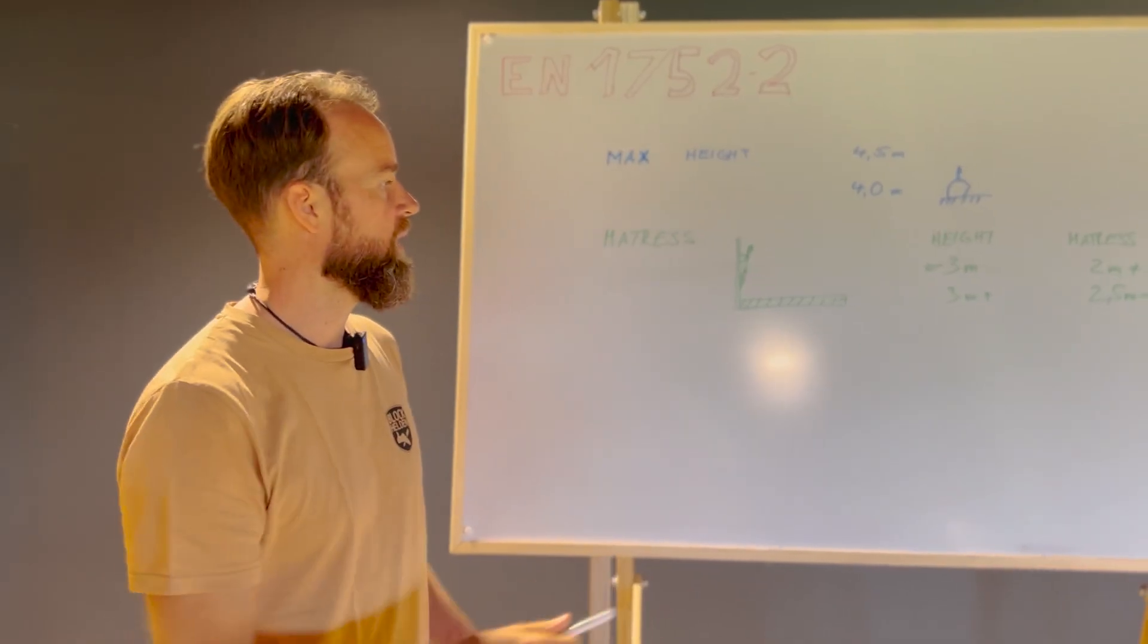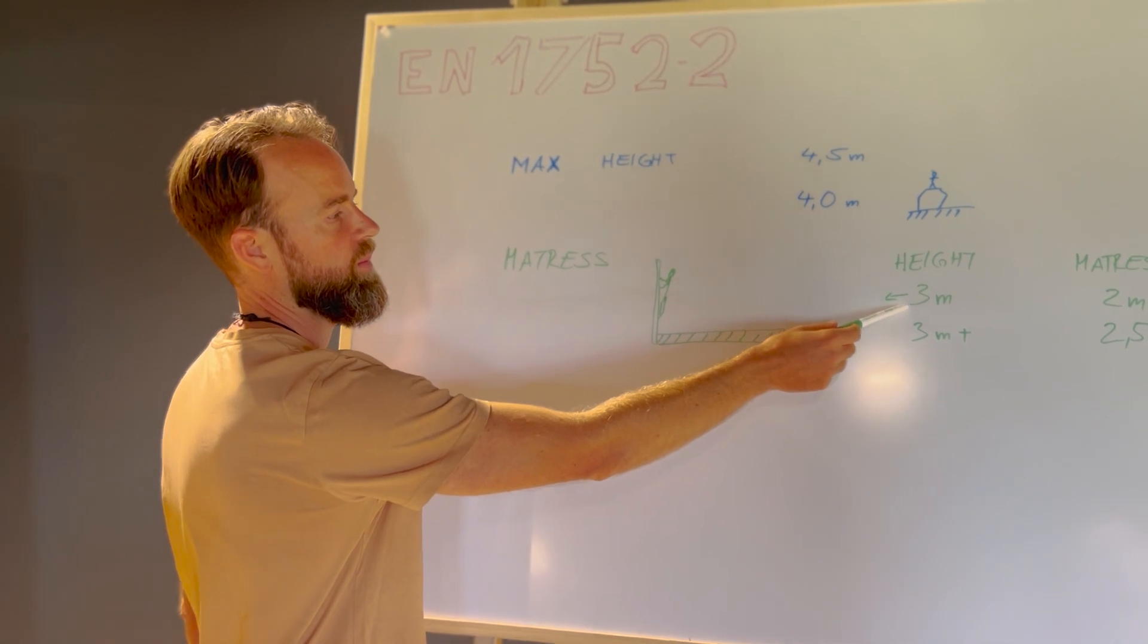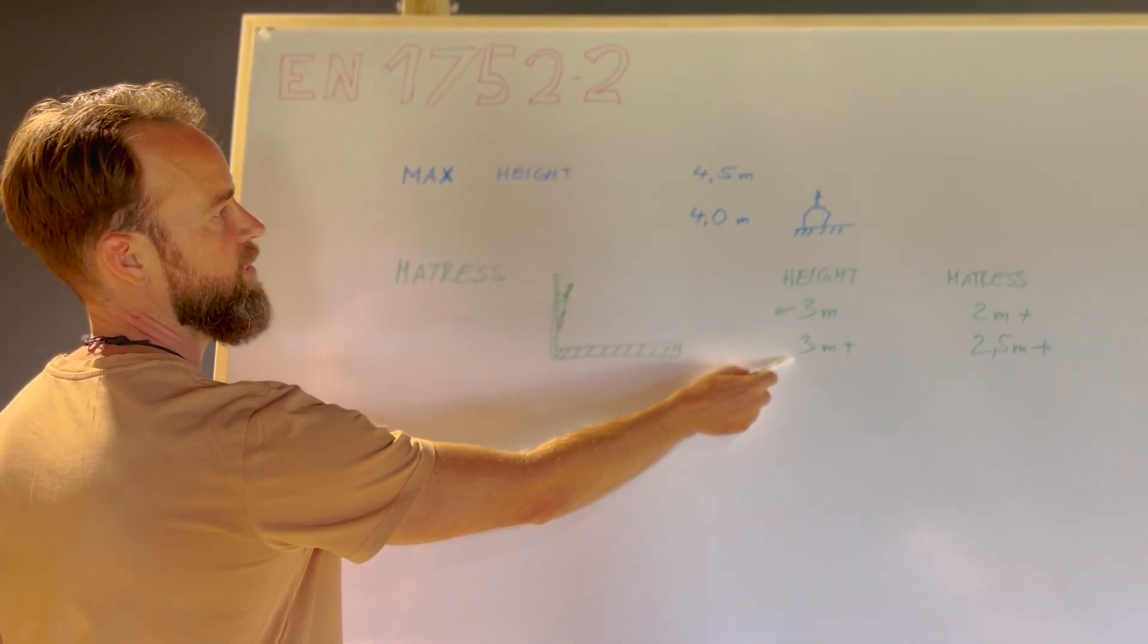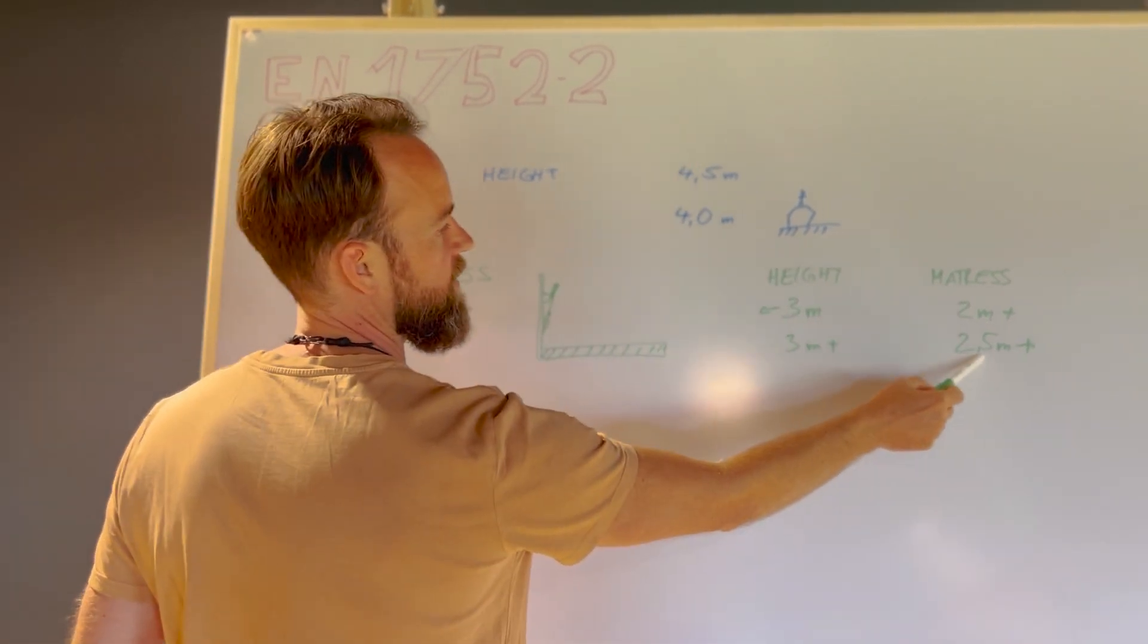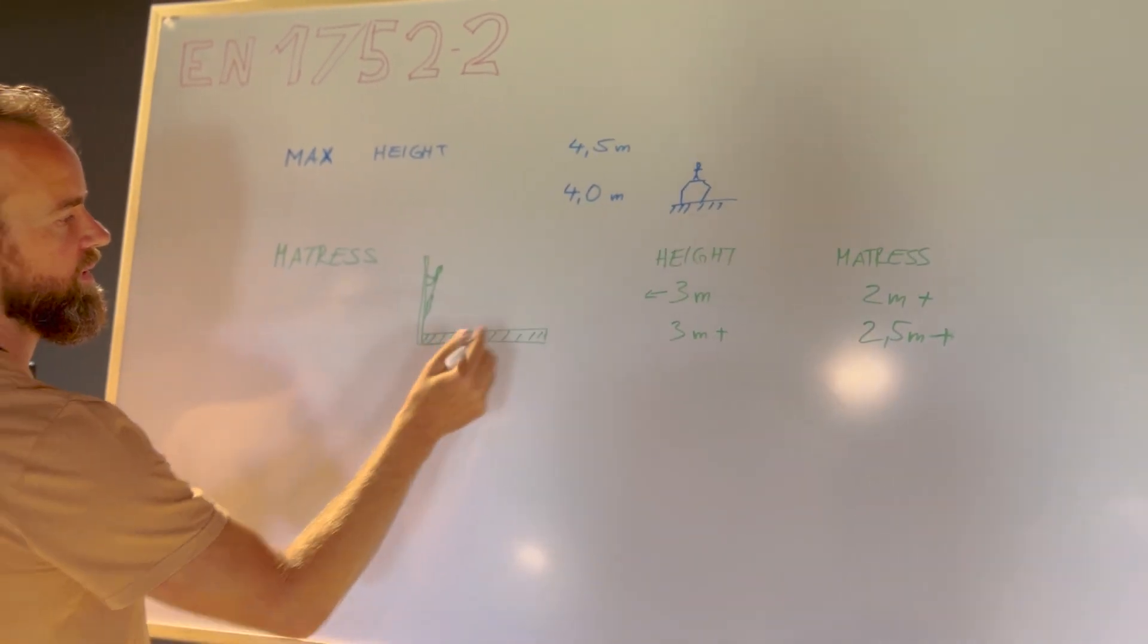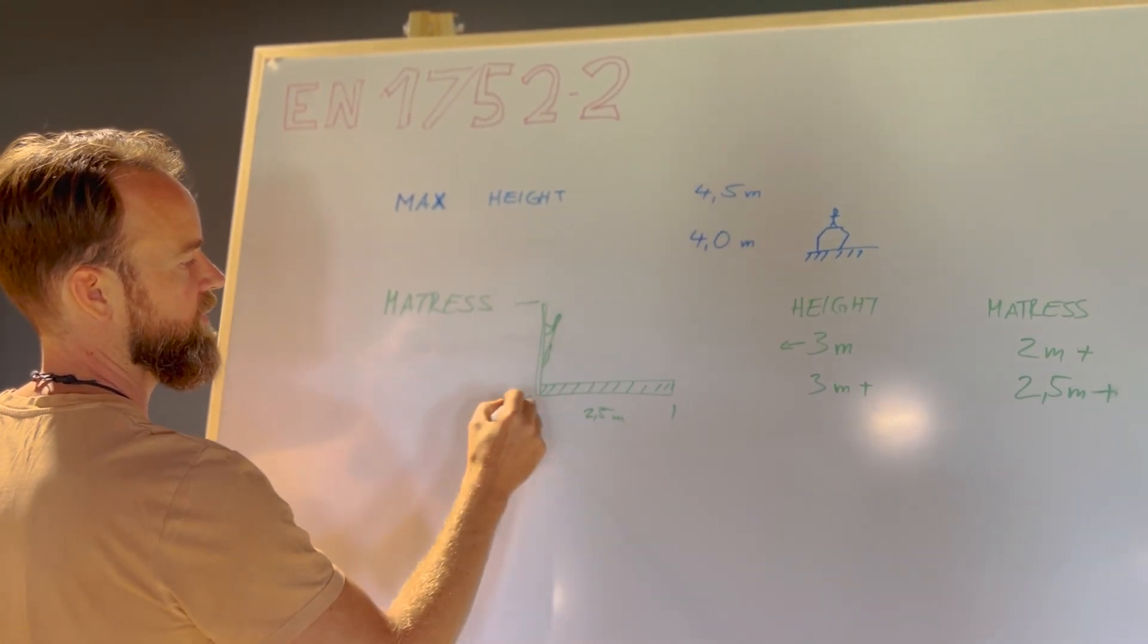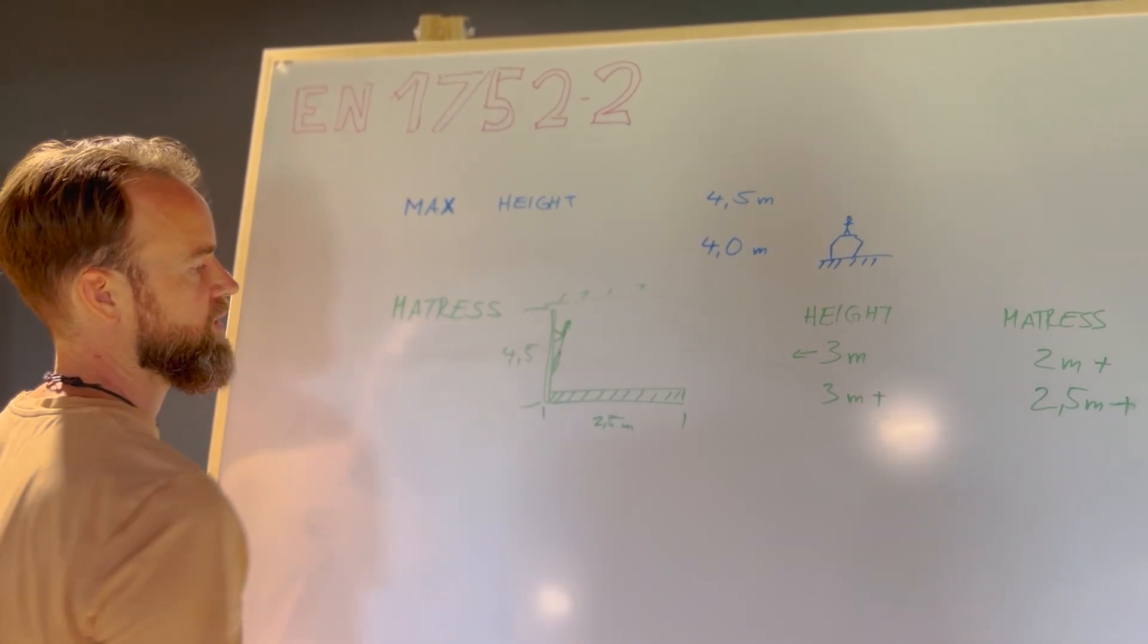The second major regulation is the mattress area, basically your safety zone. It's defined by the height of the wall. If your wall is lower than 3m of height, you need 2m or more of mattress area. If you have more than 3m, a max of 450, then you have to have at least 250. Normally you will always want to have 250, and this is your max of 450 if you cannot top out.